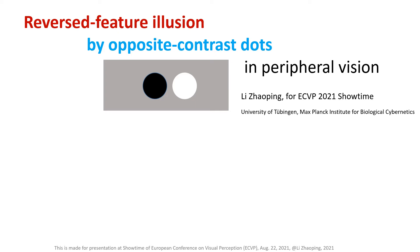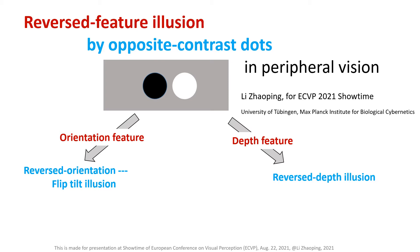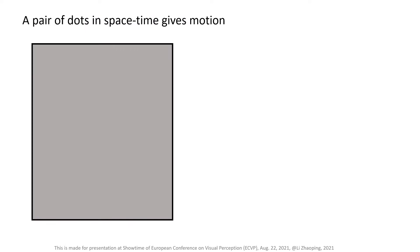Reversed feature illusion by opposite contrast dots in peripheral vision. I will present two examples of such illusions. When the feature dimension is orientation, this gives a perception of reversed orientation, called flip tilt illusion. When the feature dimension is depth, this gives reversed depth perception. Let me show you that they are both analogous to the well-known reverse phi motion.